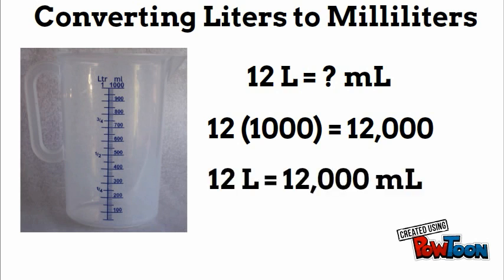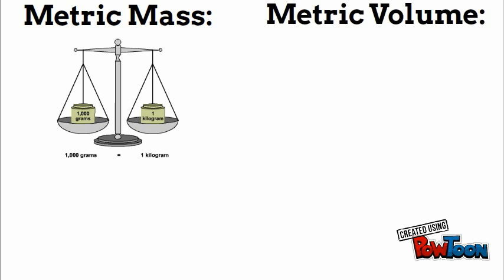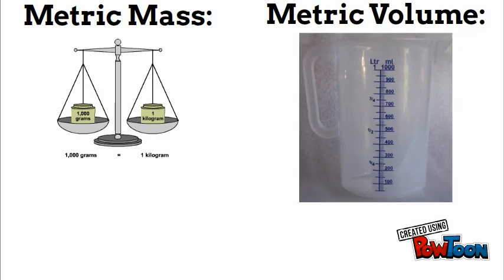To sum it up, metric mass units or weight: one thousand grams equals one kilogram. Metric volume, or measurement of liquid that fills objects: one liter equals a thousand milliliters. Thanks for watching, see you next time.